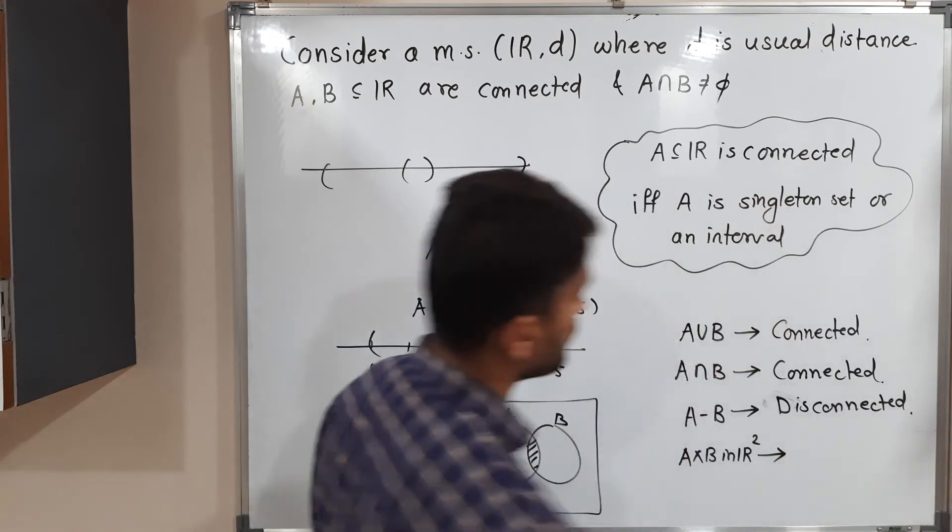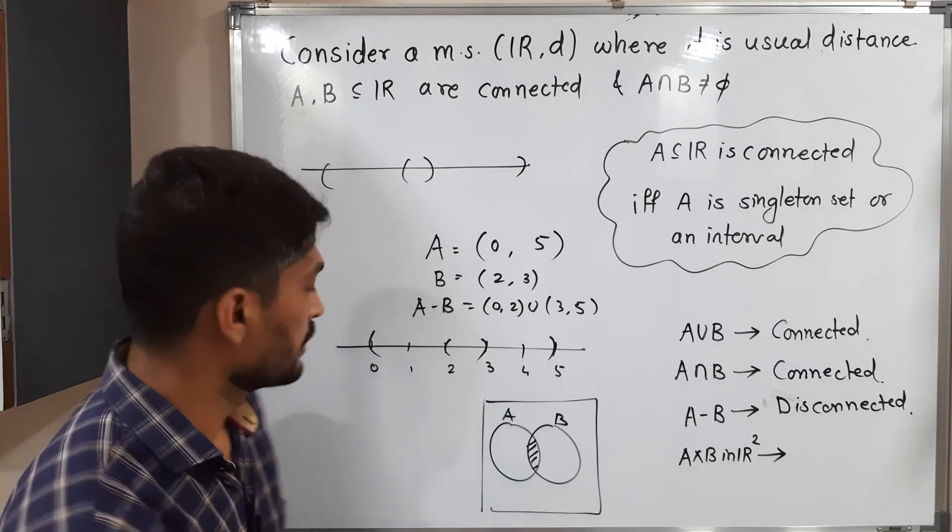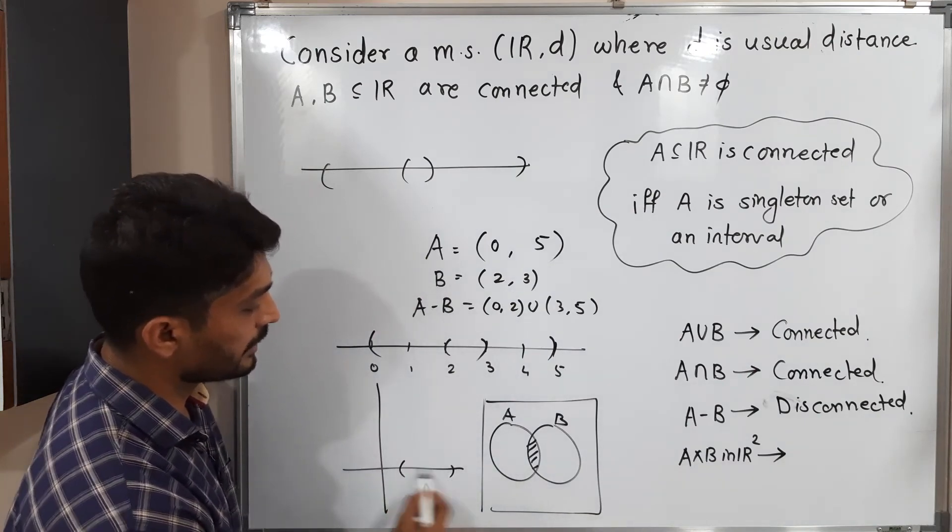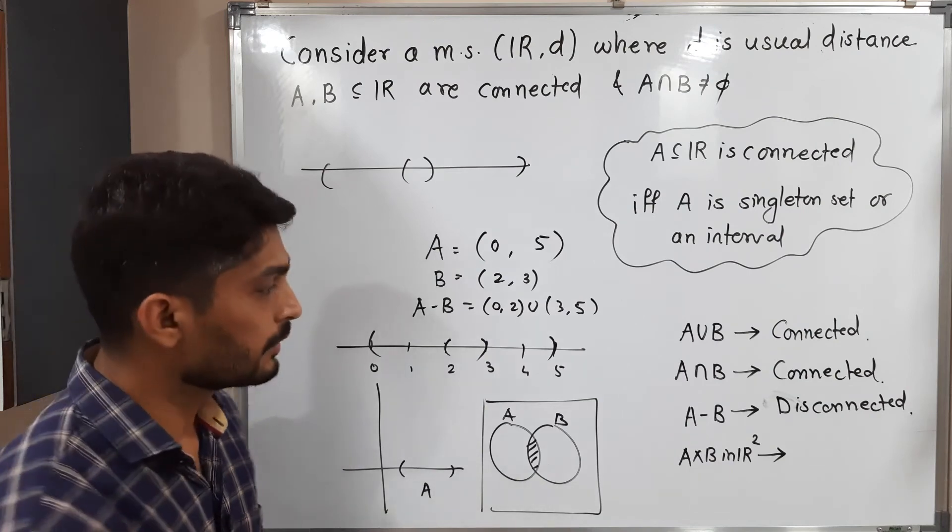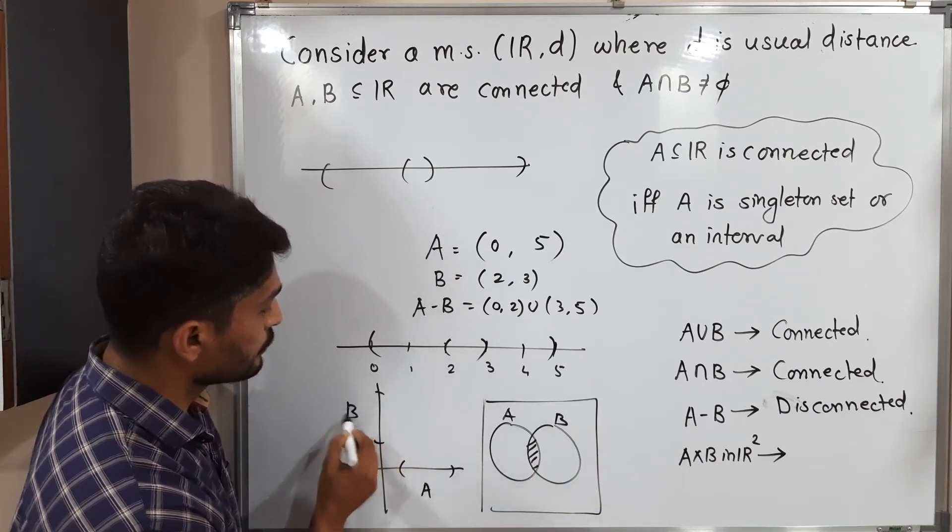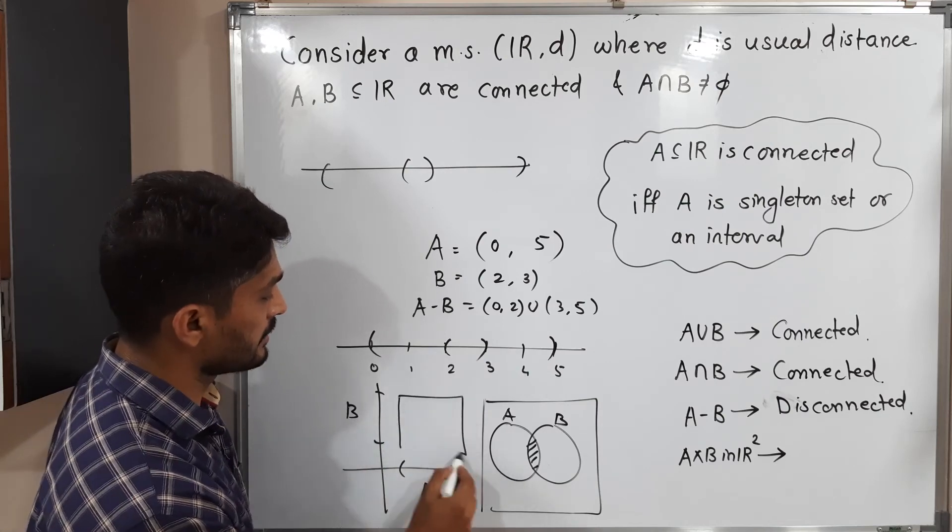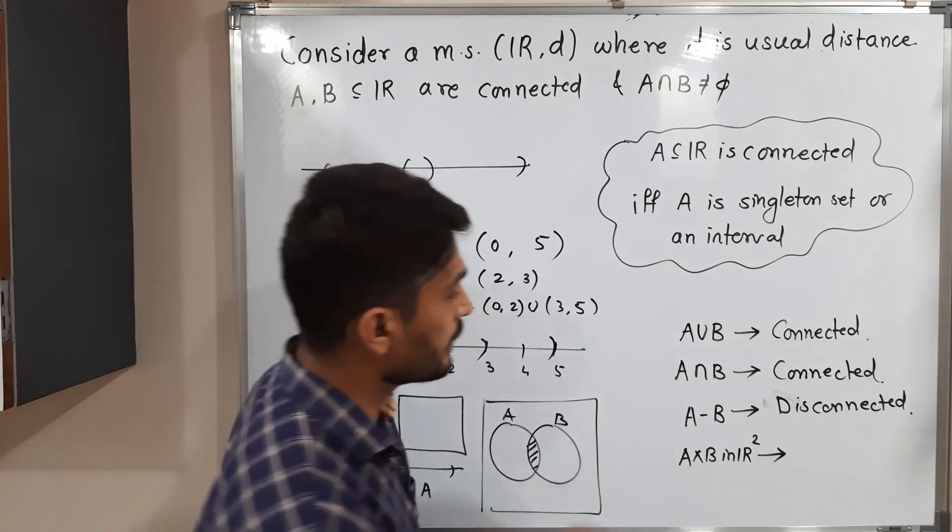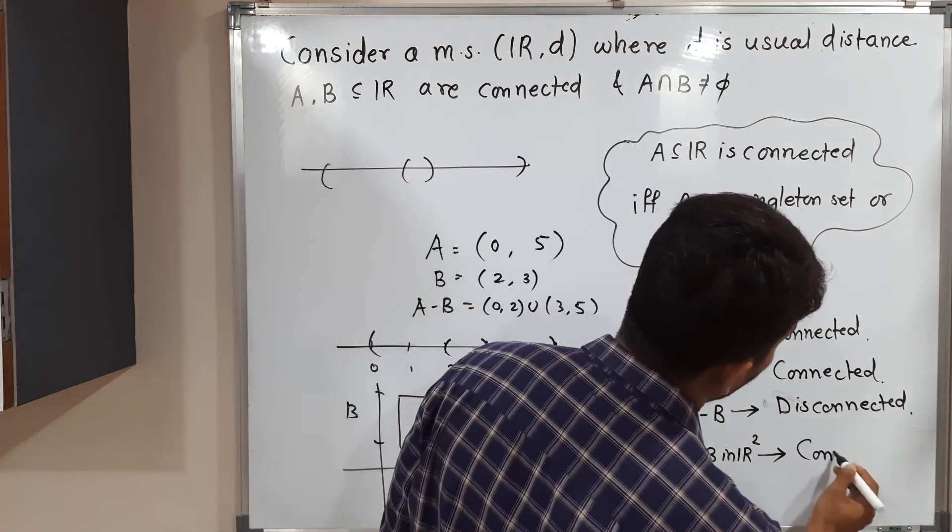Let us talk about the last one. A cross B in R2. So in R2, what will happen? Our set A is an interval on x-axis. B is connected, so that is also an interval on y-axis. So if you take a cross product, you will have a rectangle like this. Obviously, that rectangle is a connected set. So that's why A cross B in R2 is also connected.